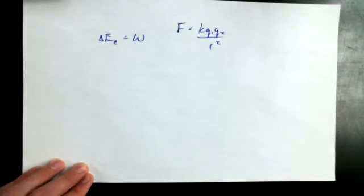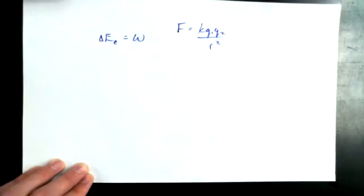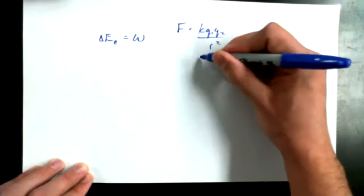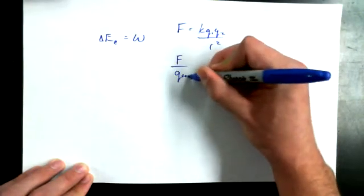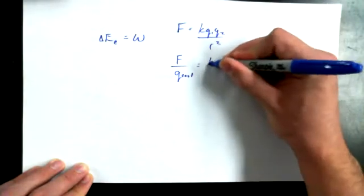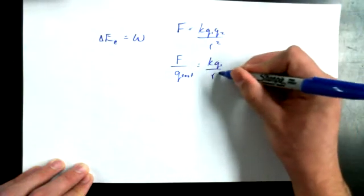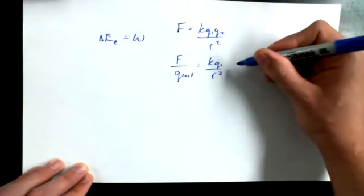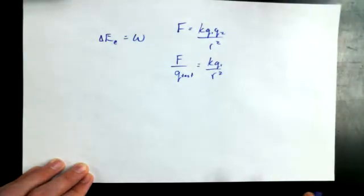And we said previously that force... what would happen if I divided the force by Q test? What would I get? KQ1 over R squared. So if I said F over Q test, where Q2 is equal to the Q test, I would say that this would be equal to KQ1 over R squared. And what we said yesterday was, what's that one equal to? It's the amount of newtons per Coulomb that would be applied to something. What did we call that yesterday? Yeah, it was electric field intensity.